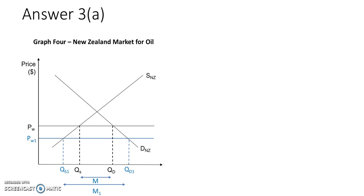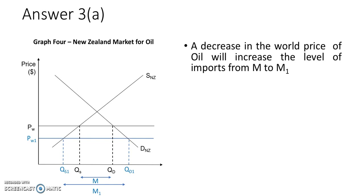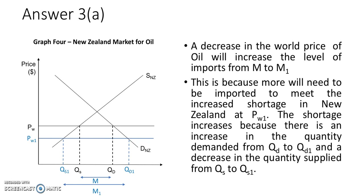Keep the graph neat and clean. In explaining it, first state the effect on imports - M to M1 - as that's what the question asks. Start by stating the obvious: at PW1 there is a shortage between quantity demanded and quantity supplied. The shortage increases from Qd minus Qs to Qd1 minus Qs1, so we need to import more to meet the increased shortage. Use as many data labels from the graph as possible. Make sure you include the shortage idea in your answer.